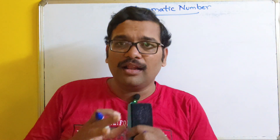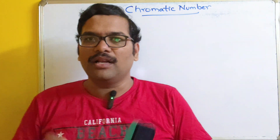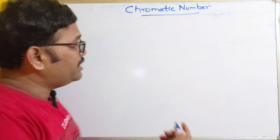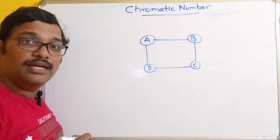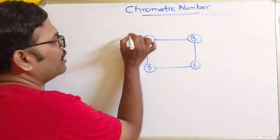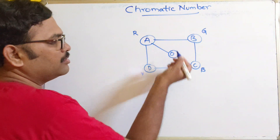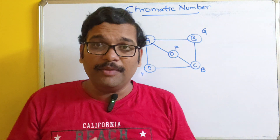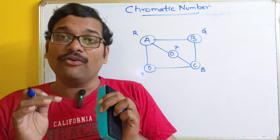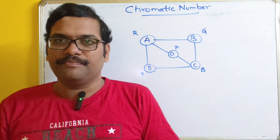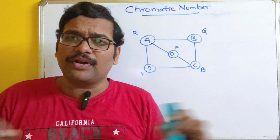In our previous session we discussed graph coloring, which means we need to color the vertices such that no two adjacent vertices share the same color. For example, if a graph has four vertices we can color them with red, green, blue, and yellow — but simply using a different color for every vertex is not correct. We need to use the minimum number of colors.